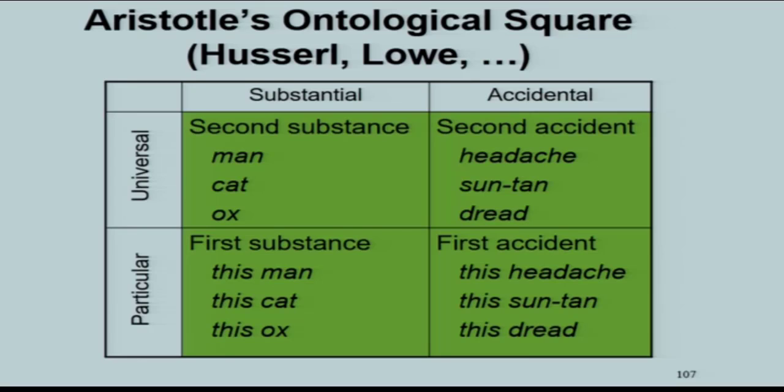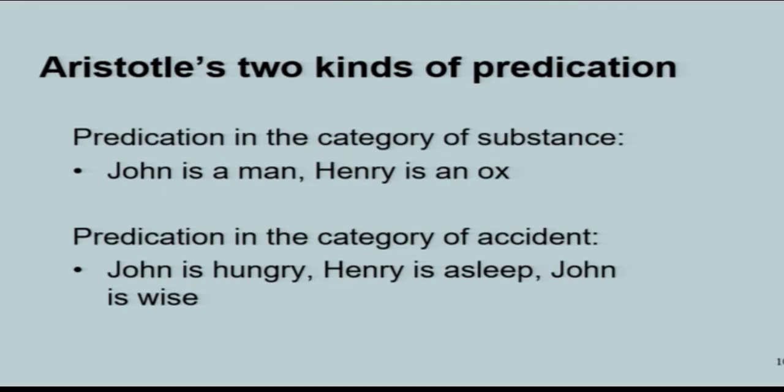I didn't mention this when I was talking about SUMO earlier, but SUMO only allows predication in the category of accident. It doesn't allow headaches and suntans to exist. When I argued with Adam Pease about this, he couldn't understand what I was getting at. He is such a phantologist that he didn't understand that there could be such things as tropes. And he certainly didn't accept that there could be universals. He has his F's, which are in the top right, and his A's, which are in the bottom left.